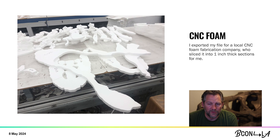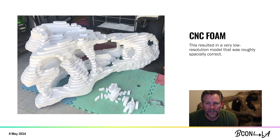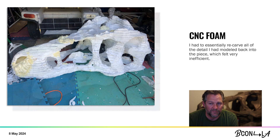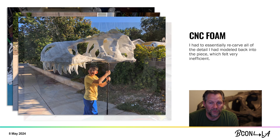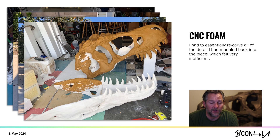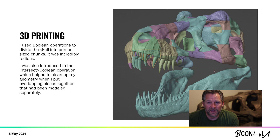I sent my first sculpt to a foam CNC shop where it was sliced into one inch sections and cut into pieces of styrofoam. I ended up hand sculpting the delivered pieces due to the lack of resolution in the deliverable from the foam fabricator, and I painted them into a finished form. The skull was then requested and subsequently donated to a natural history museum near my hometown where it's still on display to this day. While the foam skull was a satisfying exercise, it really didn't preserve the accuracy or detail of my digital sculpt as I had hoped it would.